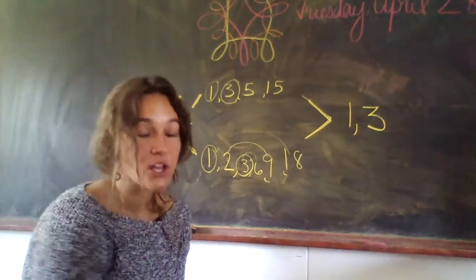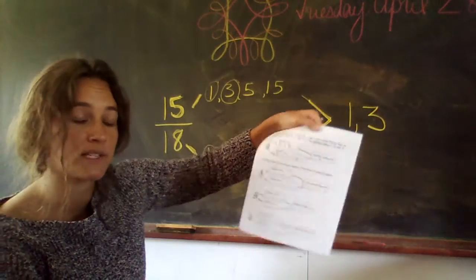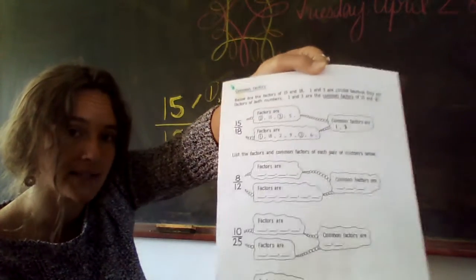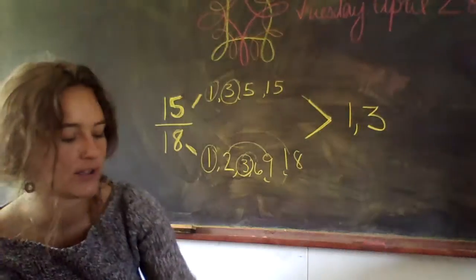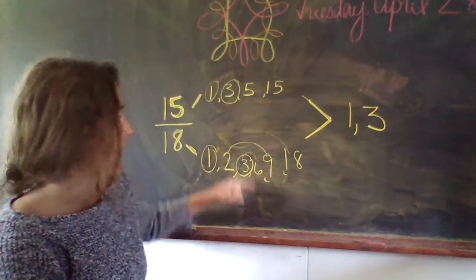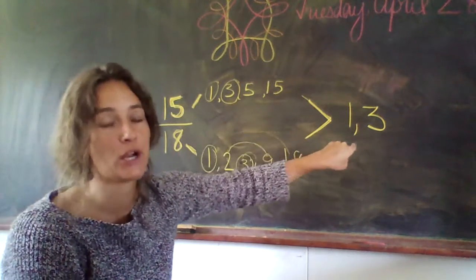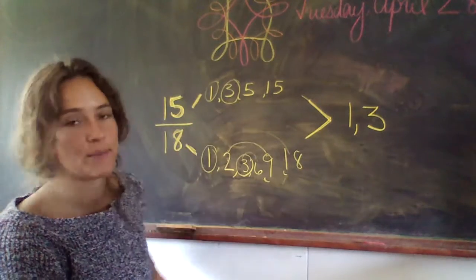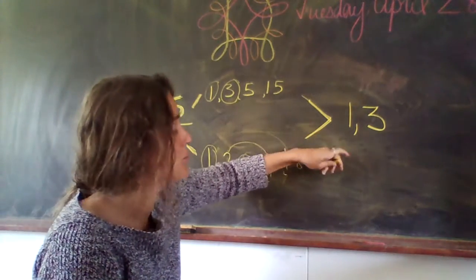Now that's all it's asking you to do, just the common factors. But if you want to go ahead and circle the greatest common factor, that is the bigger number of the common factors. Is 1 or 3 bigger? 3.